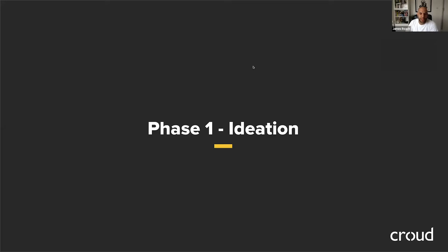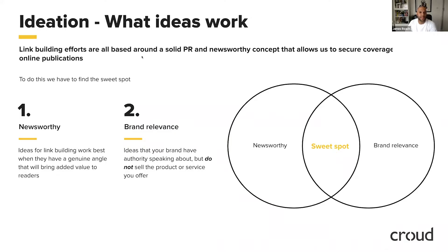Starting with ideation — there are different types of ideas that work for this purpose. Two things we try to keep in mind: everything we come up with needs to be newsworthy, since we're reaching out to journalists who work for news publications. But the idea also has to have some brand relevance so that your brand is in a position to be talking about that subject. At the same time, we don't want the content to actually talk about a specific product or service, because that deters journalists from featuring it. It's about finding the sweet spot between newsworthy and brand relevant.